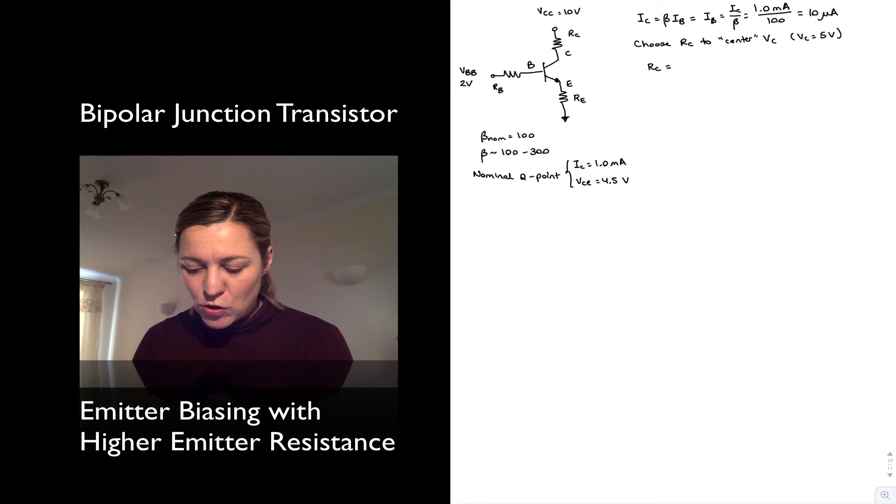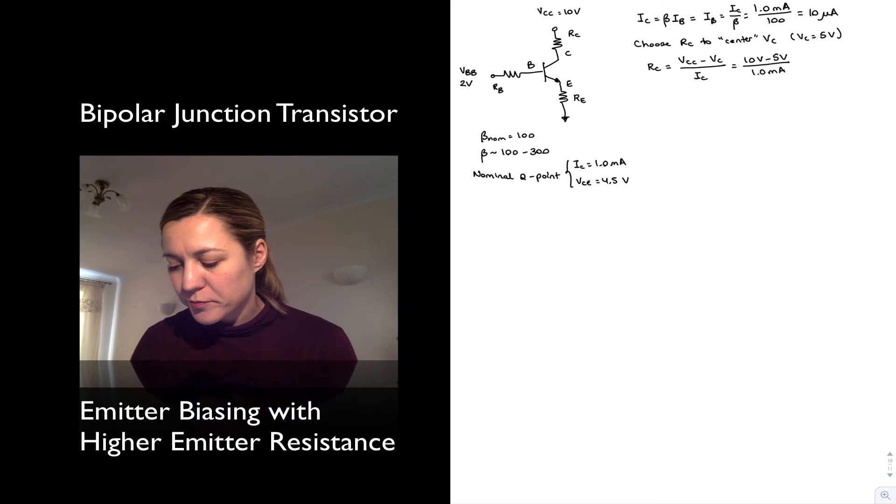RC by Ohm's law was equal to VCC minus VC divided by IC, or 10 minus 5 divided by 1 milliamp. RC equals 5 kilo ohms, just like before, nothing's changed.